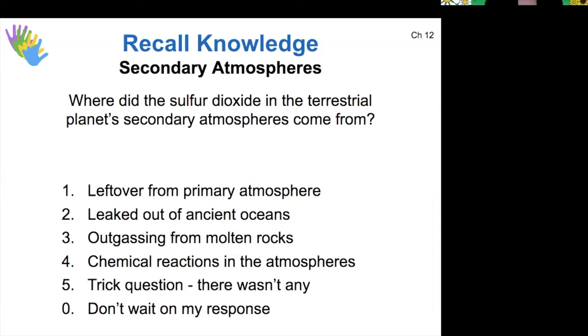Yes. So the secondary atmospheres consisted largely of sulfur dioxide and carbon dioxide, which both came from outgassing from molten rocks. So Io is essentially creating a secondary atmosphere for itself still now.